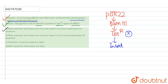Option B says both assertion and reason are true but reason is not the correct explanation of assertion — this is wrong. Option C says assertion is true but reason is false — this is wrong. Option D says both assertion and reason are false — this is also wrong. Hence the correct answer is Option A: both assertion and reason are true and reason is the correct explanation for assertion.